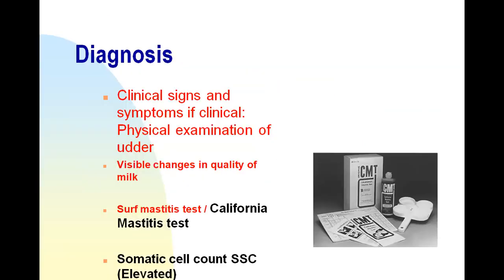Diagnosis is one of the most important parts of this lecture. The first method is diagnosis based on clinical signs, symptoms, and physical examination, which is done by a veterinarian. If milk from a mastitis-infected animal shows clots, flakes, or blood, that can also indicate a problem in the udder. Another very important and simple test to perform is the Surf Mastitis Test or California Mastitis Test.